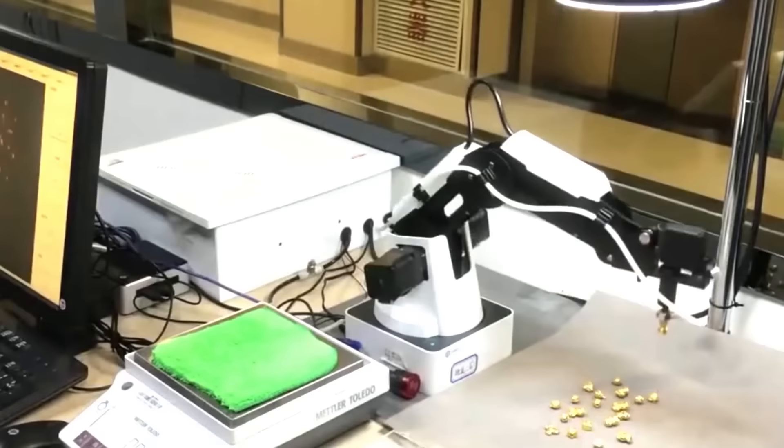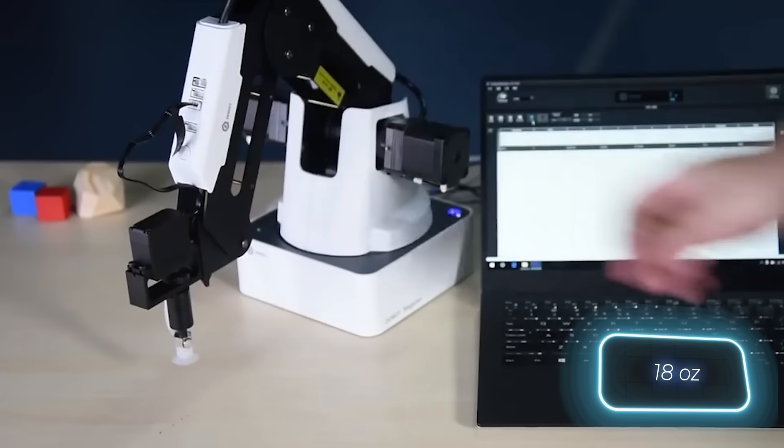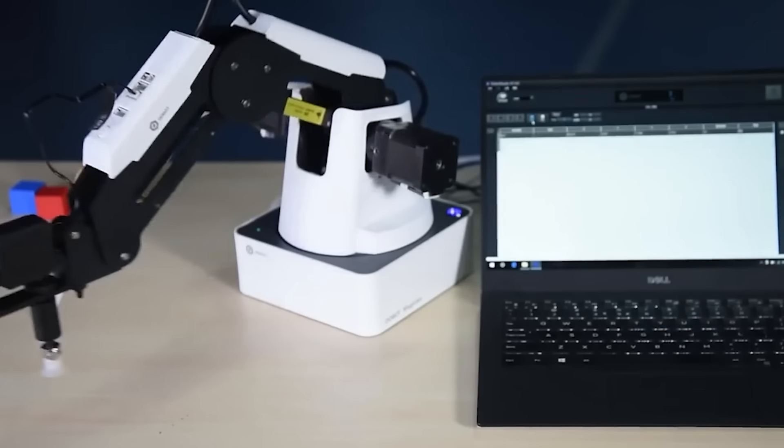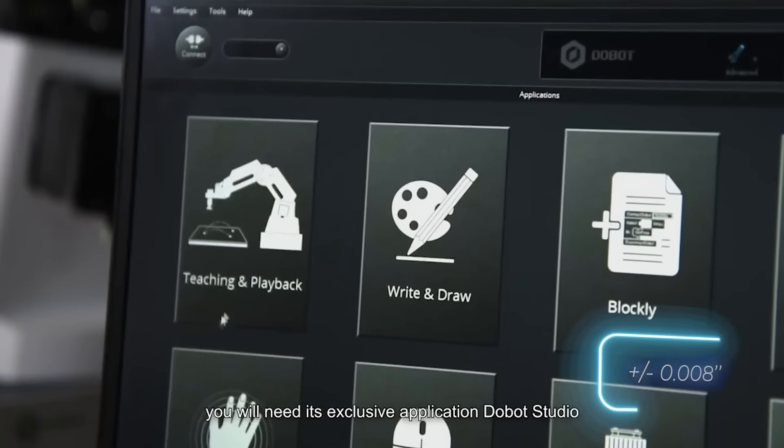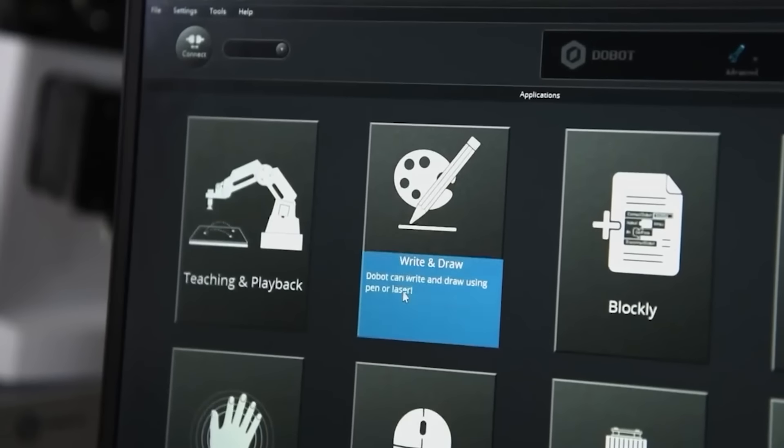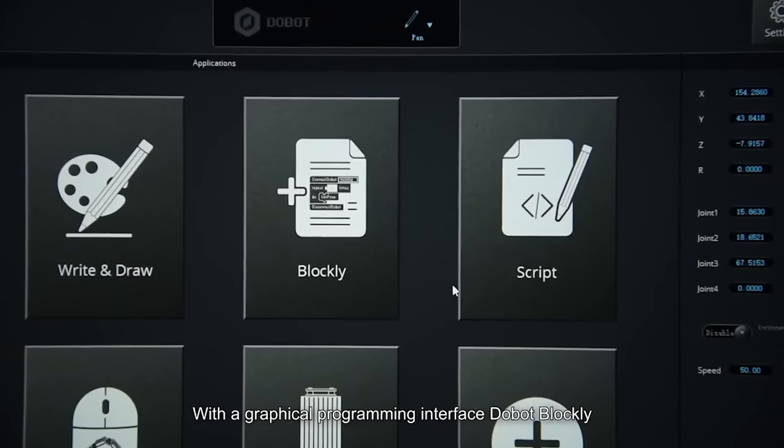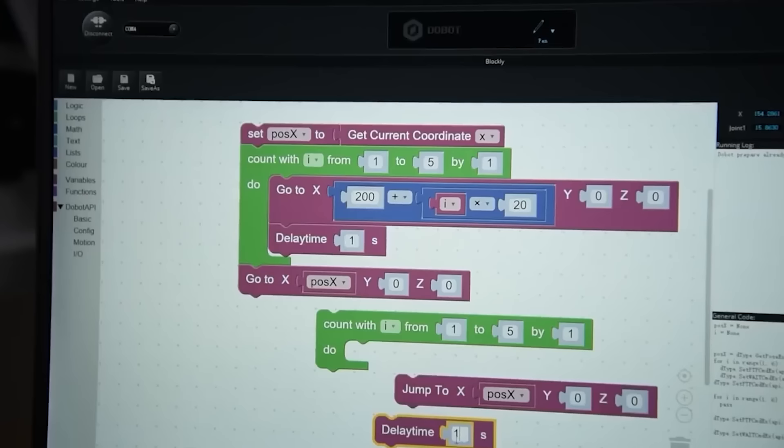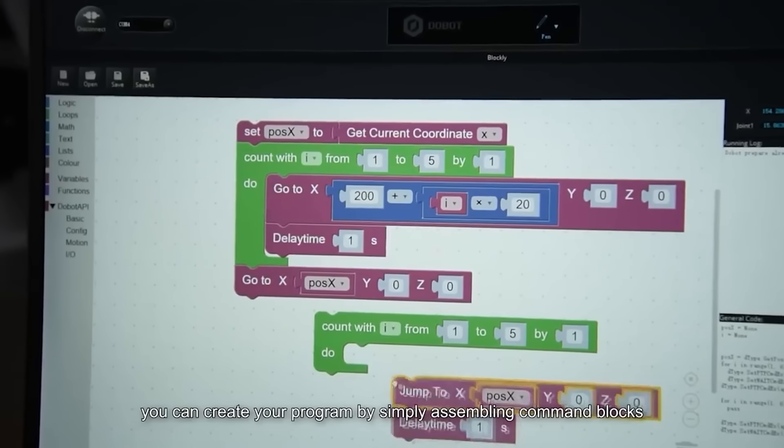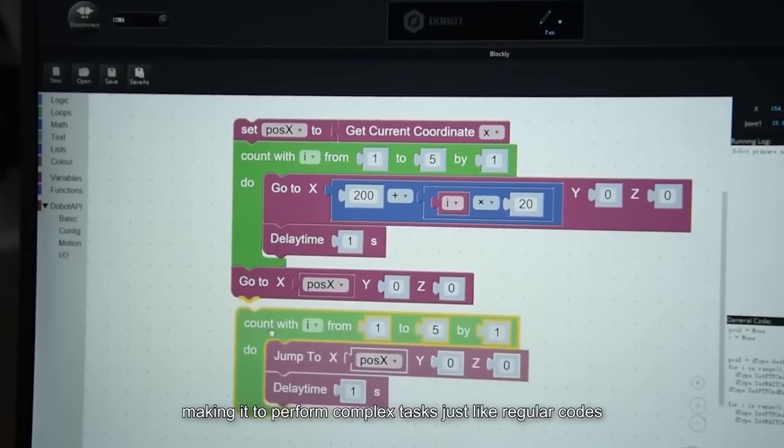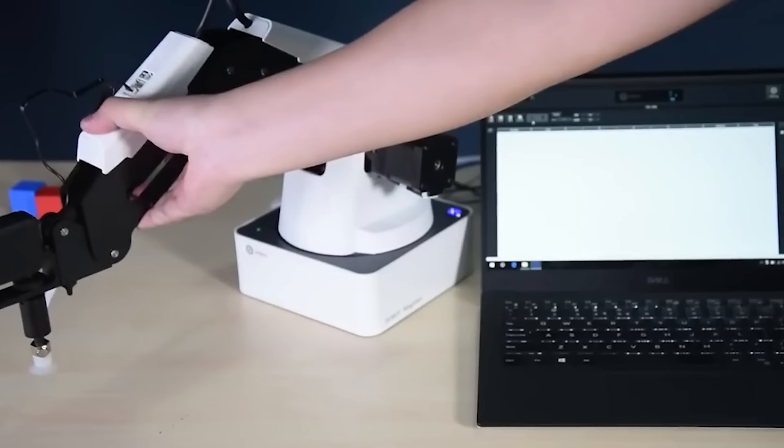The arm has a load capacity of 500 grams and an accuracy of plus or minus 0.2 millimeters. It's compatible with a variety of languages including C++ and Python, and has a visual programming mode for beginners. Just stack blocks of code as a construction set—even the youngest students will find it interesting. If you move the arm manually, it will remember and repeat the trajectory.